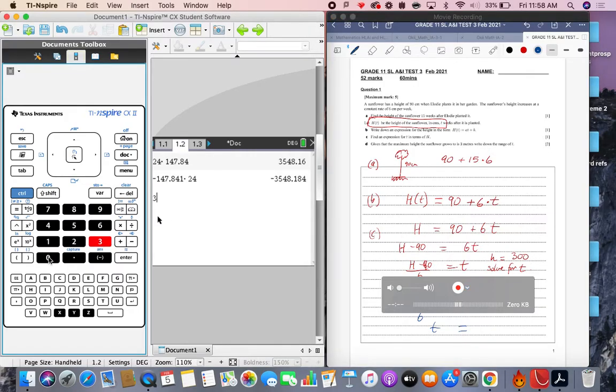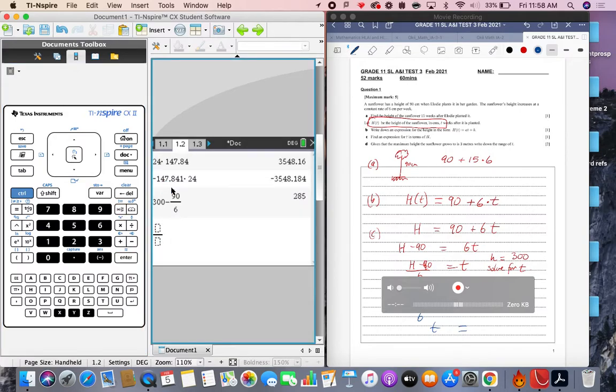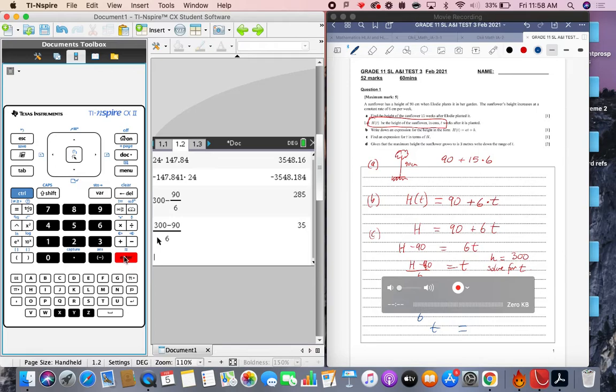And be careful when you do this. 300 minus 90. If you just do it in the calculator like this, you're going to get the wrong answer, all right? Because it's the whole thing divided by the 6. So you've just got to be a little bit careful with the way you type things into the calculator. Better to get that little fraction template there. Now it's going to be nice and clean entry. 35.